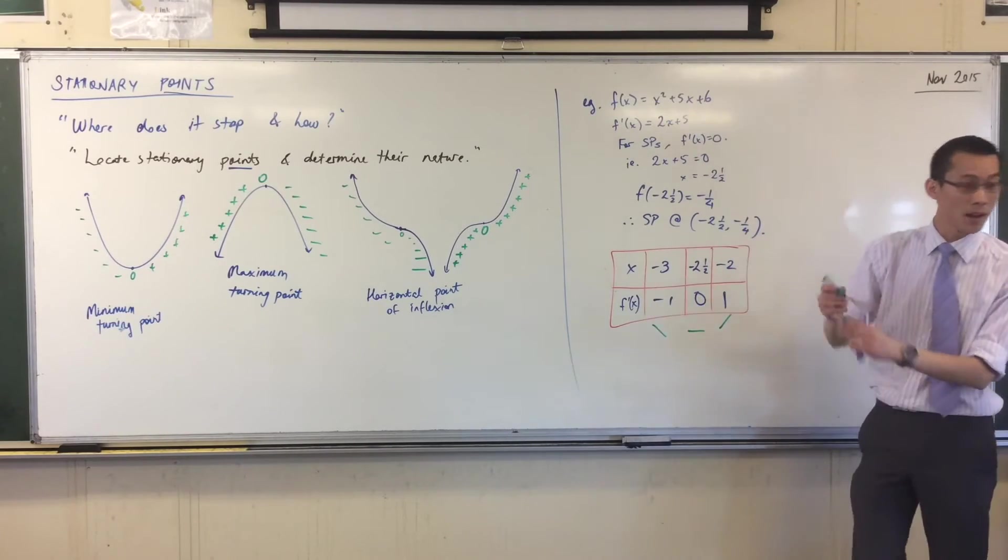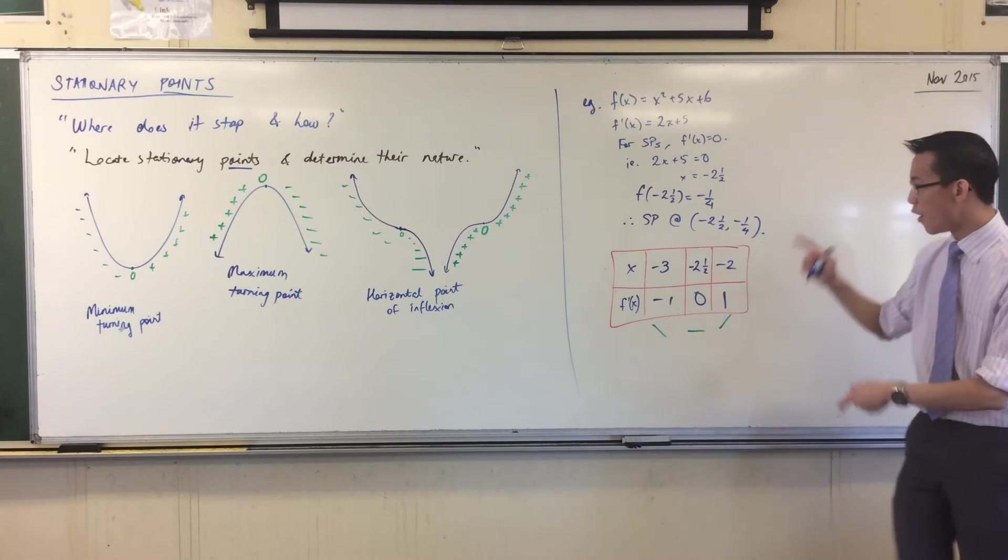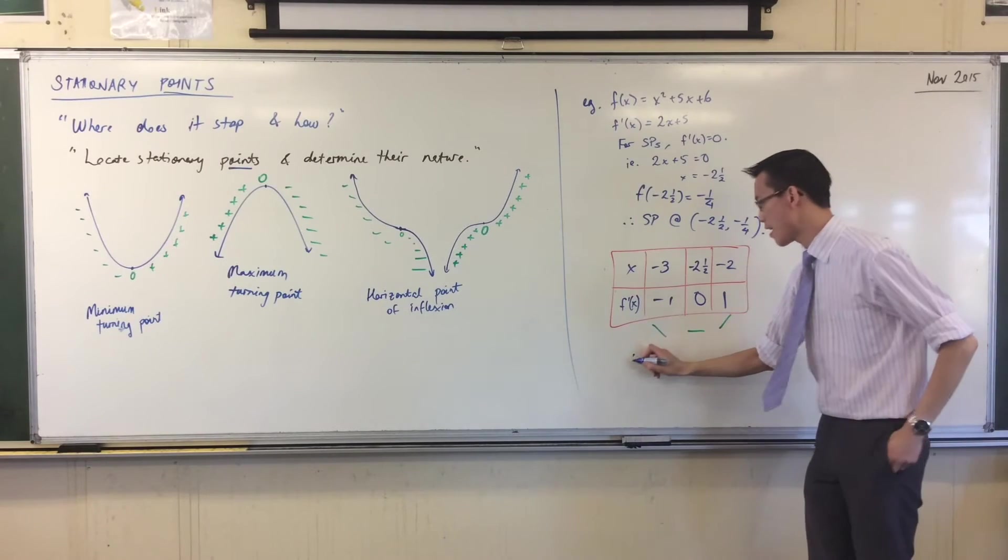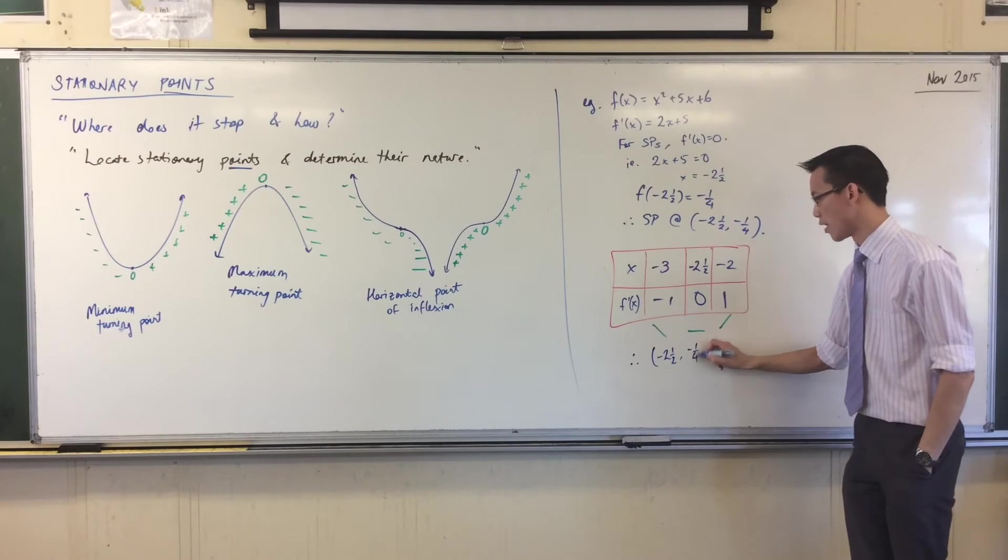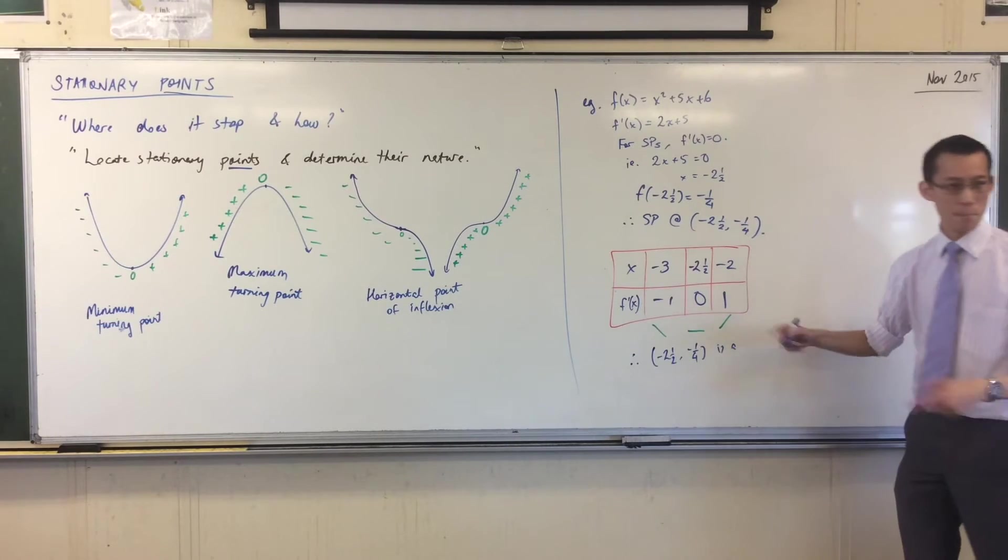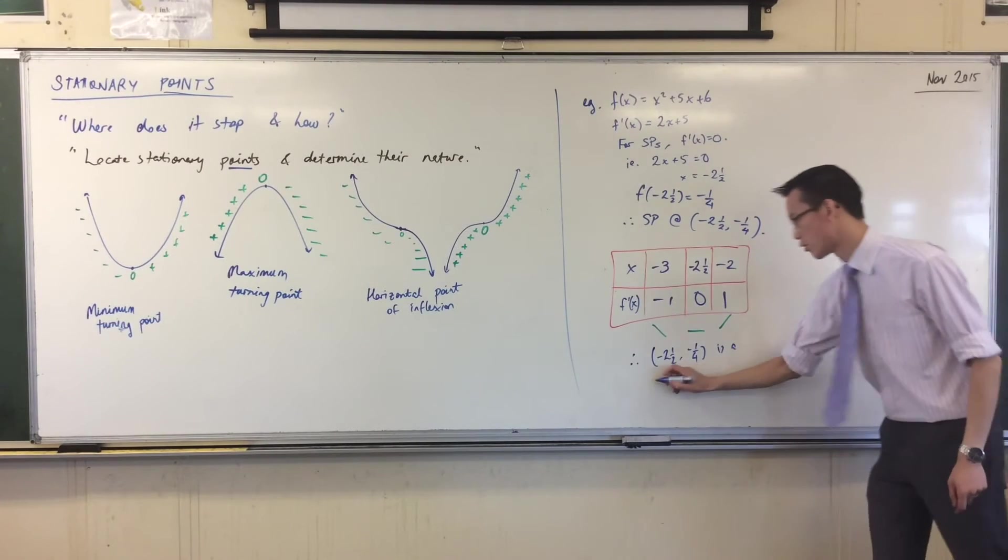It's a minimum because of course it's just this parabola. So I would say, off the basis of this table, therefore negative 2.5, negative a quarter is a minimum turning point. That's the kind of turning point you use.